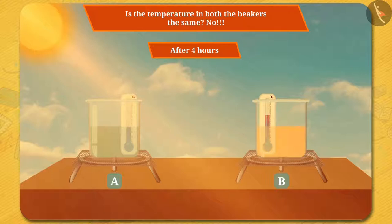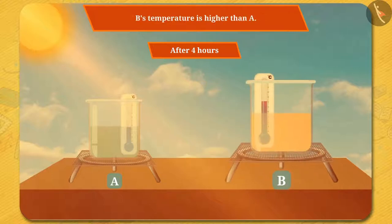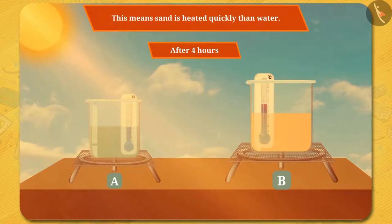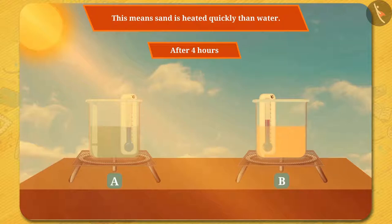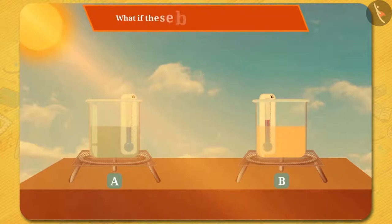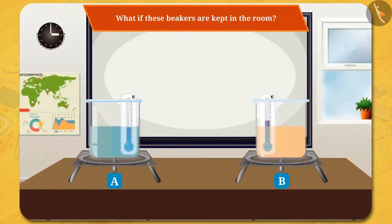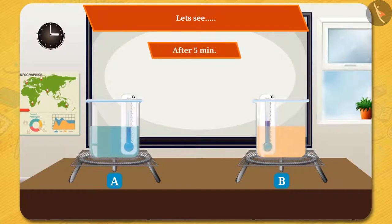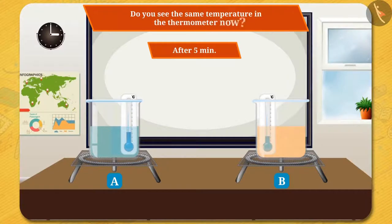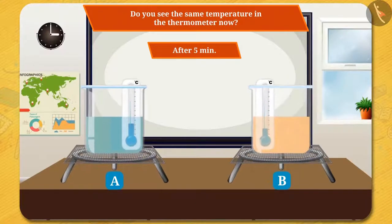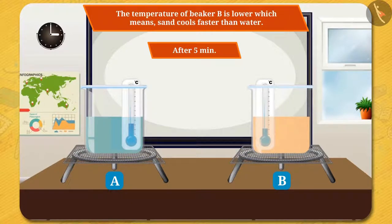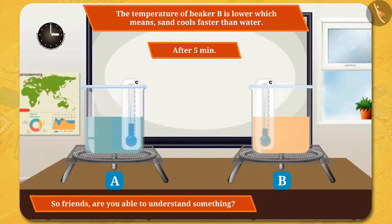Is the temperature in both beakers the same? No — beaker B's temperature is higher than A. This means sand is heated more quickly than water. But what if these beakers are kept in the room? The temperature of beaker B is lower, which means sand cools faster than water.